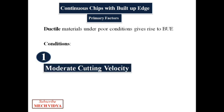The first one is moderate cutting speed. Here the temperature is high enough to soften the material but not high enough to keep the chips flowing smoothly.